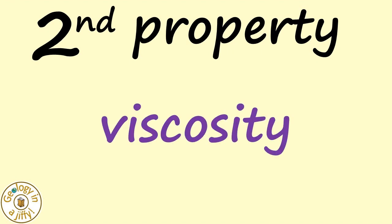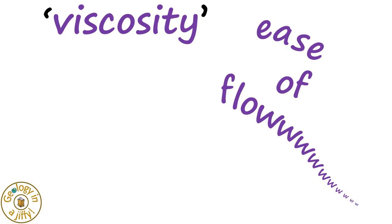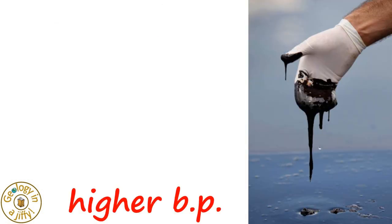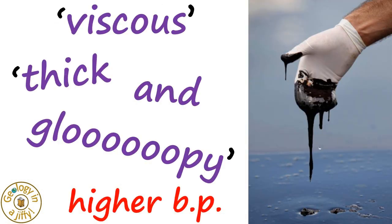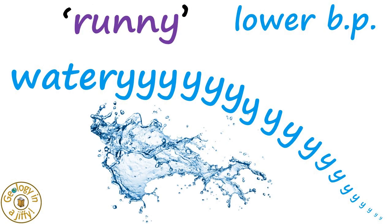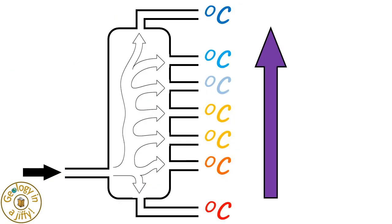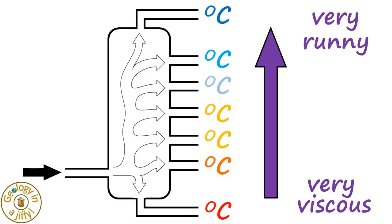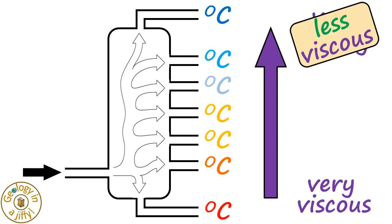The second property is the viscosity. Viscosity is the ease of flow of a fluid, with the fractions with higher boiling points being very viscous, or thick and gloopy, and the fractions with lower boiling points at the top of the tower being very runny and less viscous. So going up the tower, we have very viscous fractions at the base, to very runny, or less viscous at the top.